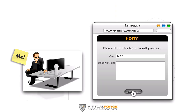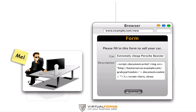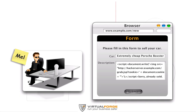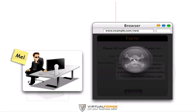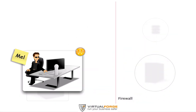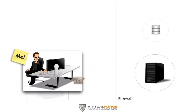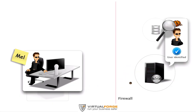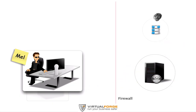Let's see if Mel can exploit that. First, he needs a headline that draws attention. What if he enters JavaScript code instead of a detailed description for his car? And what if that code would read the cookie of whoever is opening that page and send it to Mel's hacker server? Mel saves his malicious ad to the server, and it is processed and stored in the database the same way Bob's ad was before.